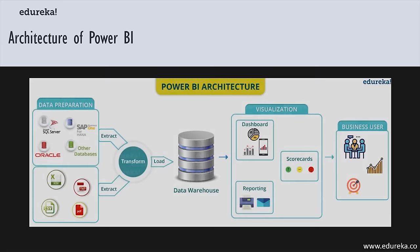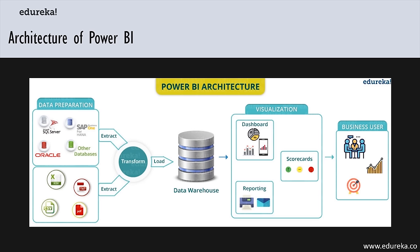Power BI's architecture has three phases: the first two partially use ETL to handle data, and then you have data presentation. The first phase is data integration — an organization may deal with data from different sources in different file formats. The data is first extracted from these sources, integrated into a standard format, and then stored at a common area called a staging area.